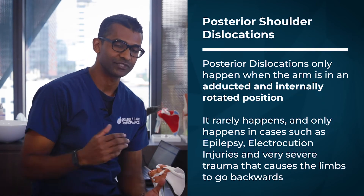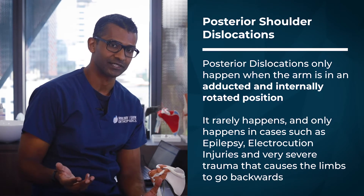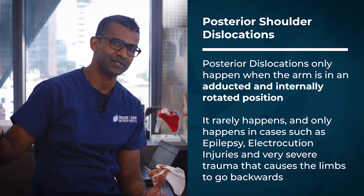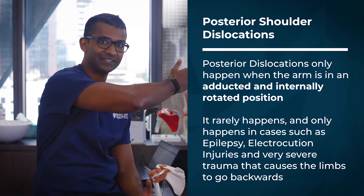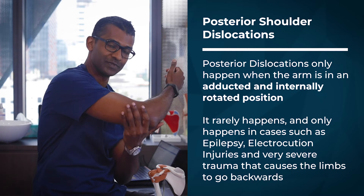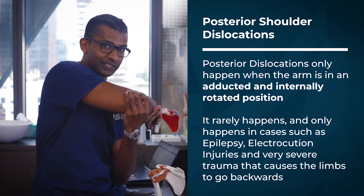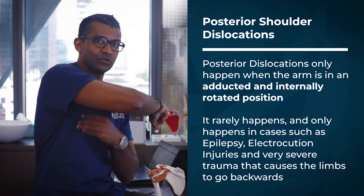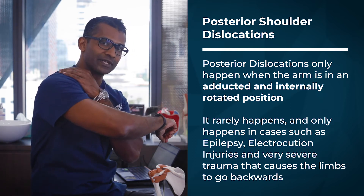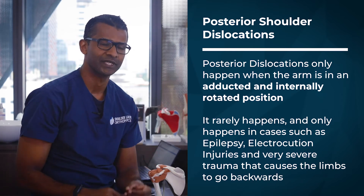Conversely, a posterior dislocation occurs when the arm is adducted — meaning brought across — and in an internally rotated position, with the arm moving out the back.